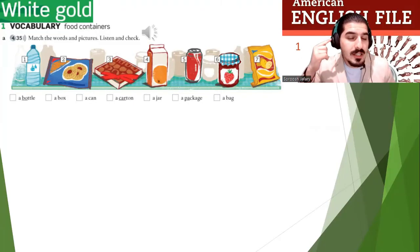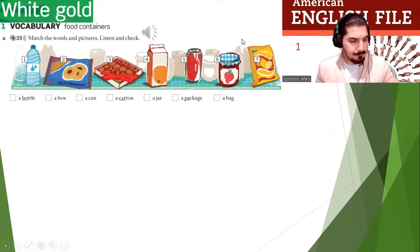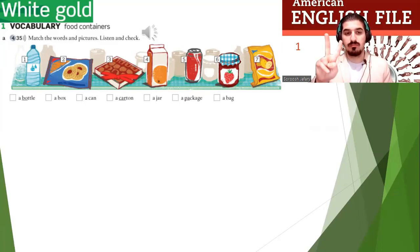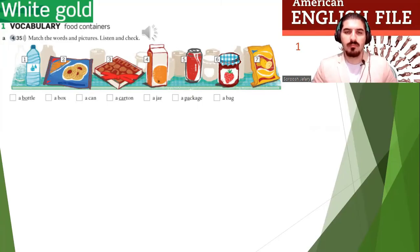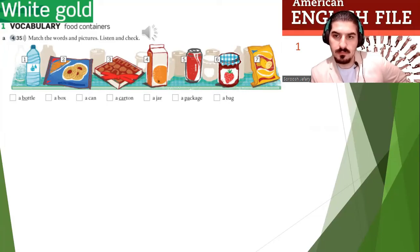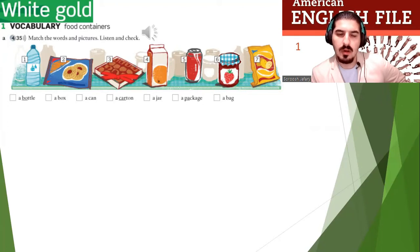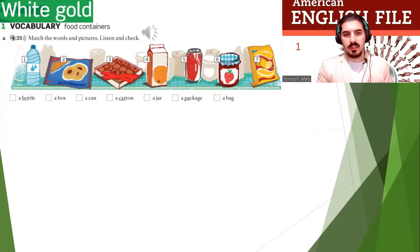Now everybody listen and check. Number 1: a bottle. Number 2: a package. Number 3: a box. Number 4: a carton. Number 5: a can. Number 6: a jar. Number 7: a bag. Well done. Check your answers with your partner. The answers are: a bottle, a box, a can, a carton, a jar, a package, a bag. These are containers.